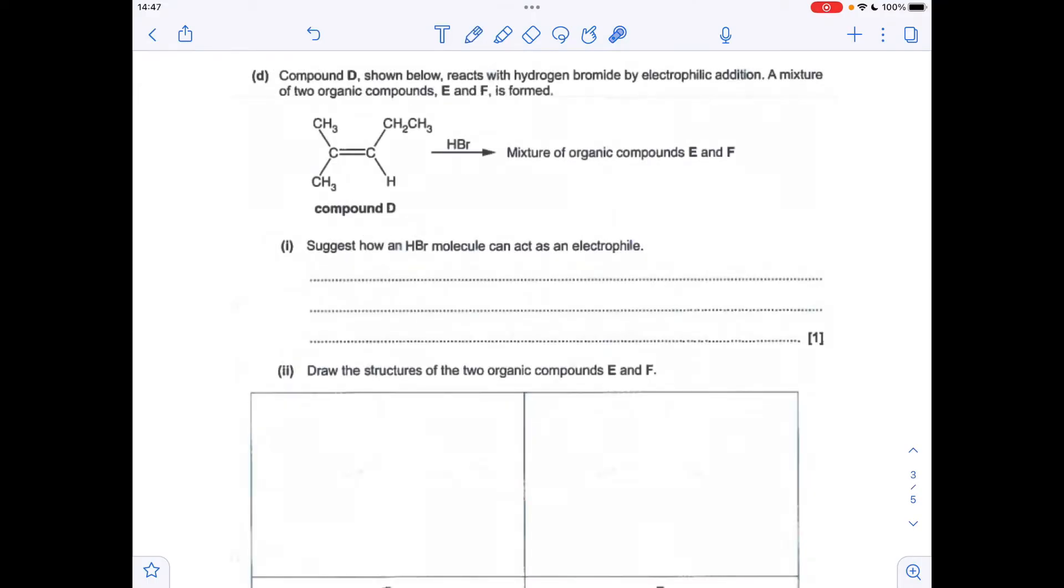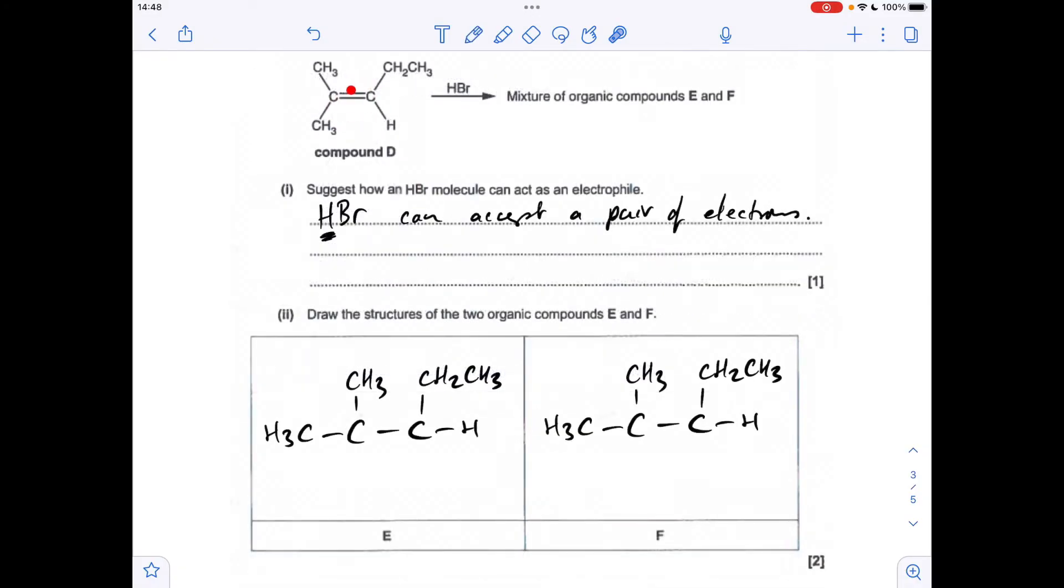Moving on to part B now, suggests how the HBr molecule can act as an electrophile. Basically, all we've got to do is weave the definition into our answer. So an electrophile is an electron pair acceptor. So something like that would be absolutely fine. HBr can accept a pair of electrons. If you want to be more specific, it's actually the hydrogen of the HBr that can accept the pair of electrons, because it's got that slight positive charge because of the higher electronegativity of the bromine.